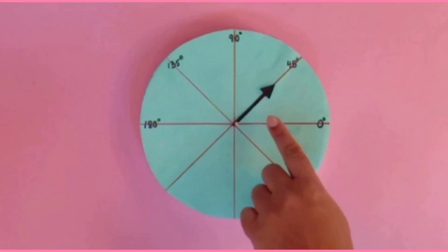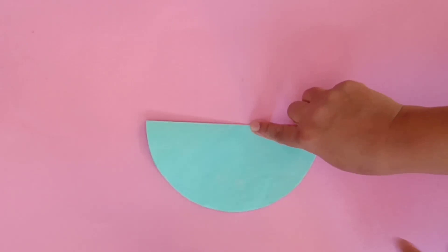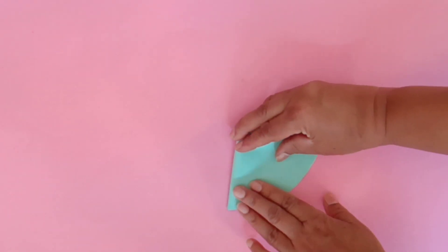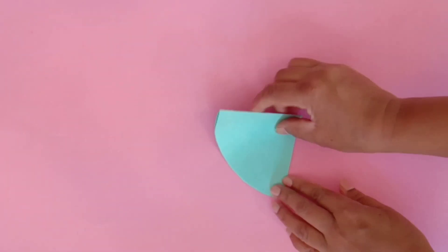Now let's make a degree clock. Firstly, take a piece of paper and cut it in the shape of a circle. Then, fold it into half. After that, fold it into one-fourth. Again, fold it one more time.